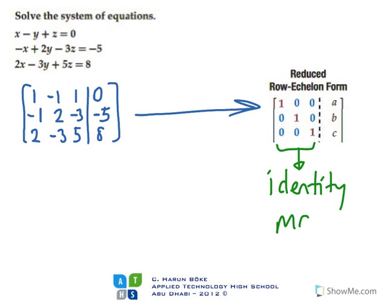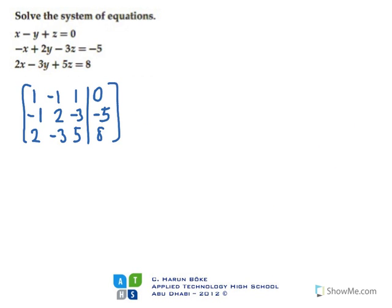Let's start the operations. If I add the first row to the second row, I will get a zero here, which is what I want.